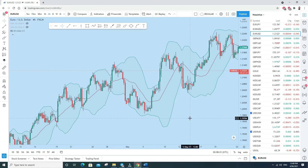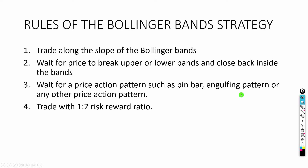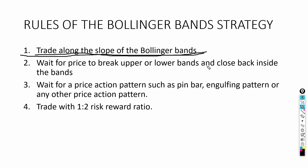Now the rules of the strategy. If you want to apply any kind of strategy you need to first establish rules, not trade based on emotions. Rule number one: trade along the slope of the Bollinger Bands. You always have to trade in the direction of the slope so that you are trading along the direction of the trend.